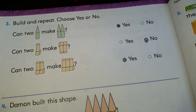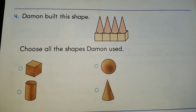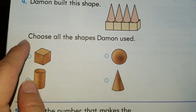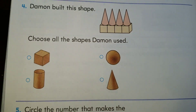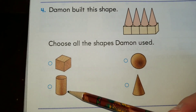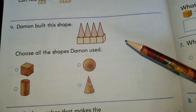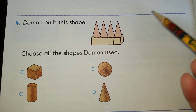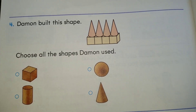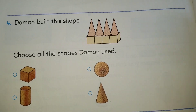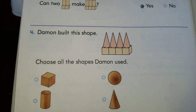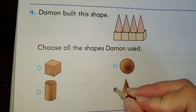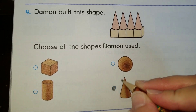Make sure you bubble in inside the bubble. This has to do a little with what we learned yesterday. It says Damon built this shape — it looks like a wall. Choose all the shapes that Damon used. Your options are a cube, a cylinder, a sphere, and a cone. Damon used two different types of shapes — he used one row of cones and one row of cubes. So choose all the shapes that Damon used. He used a cone — four cones actually. The cylinder is this one over here; he didn't use a cylinder.